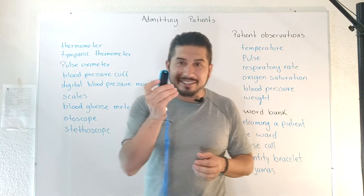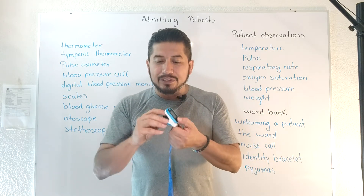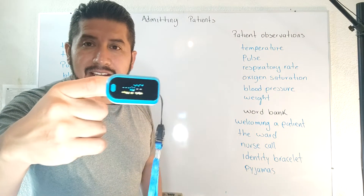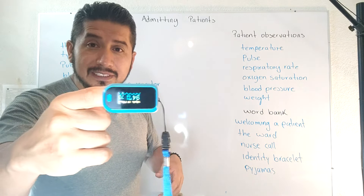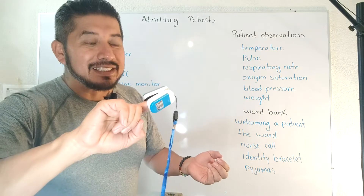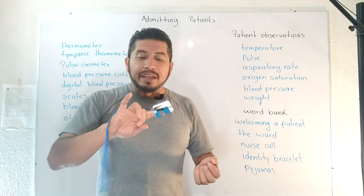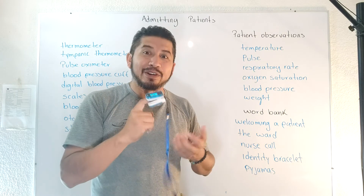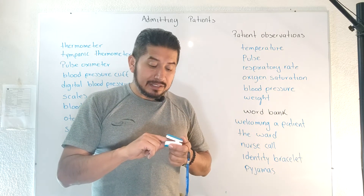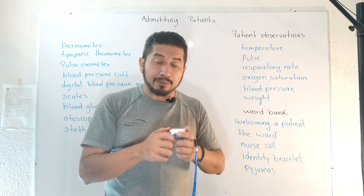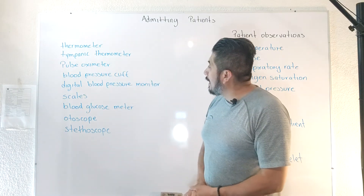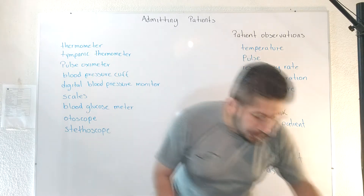I have the pulse oximeter here. You just click your finger, press the button, and you can measure your pulse and your oxygen saturation. It's pretty easy and I think now everybody has one at home because it's very common to check your oxygen saturation. Have one at home — I think it's pretty important, pretty necessary.